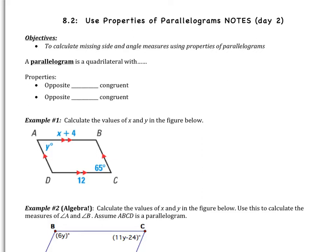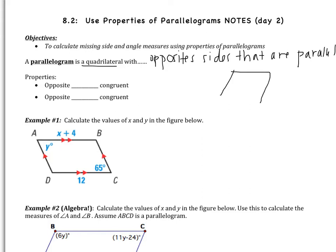First, a definition: a parallelogram is a quadrilateral with opposite sides that are parallel. Remember, a quadrilateral is just a four-sided figure. So a parallelogram is a four-sided figure where the opposite sides are parallel. One pair of opposite sides are parallel, and then another pair of opposite sides are parallel. Two important properties for every parallelogram: the opposite sides are congruent, and the opposite angles are congruent.